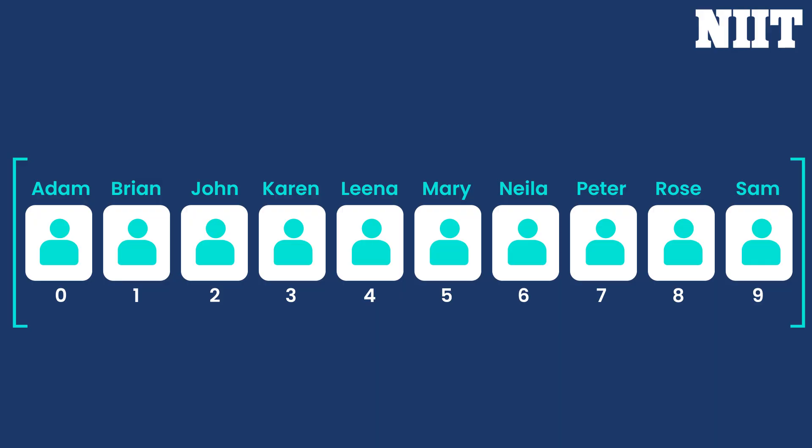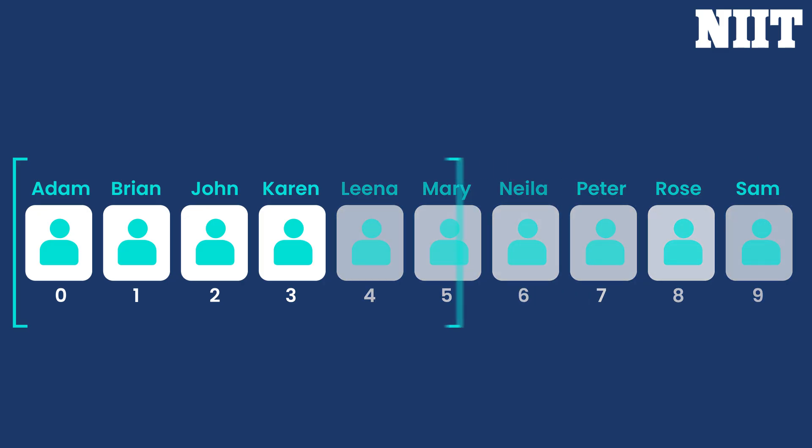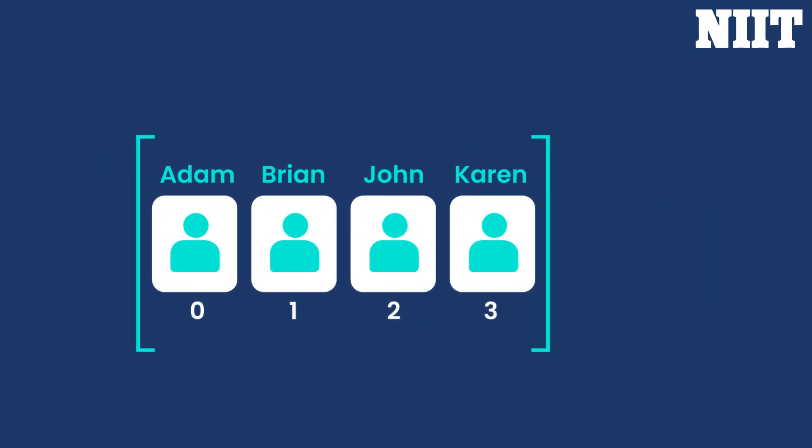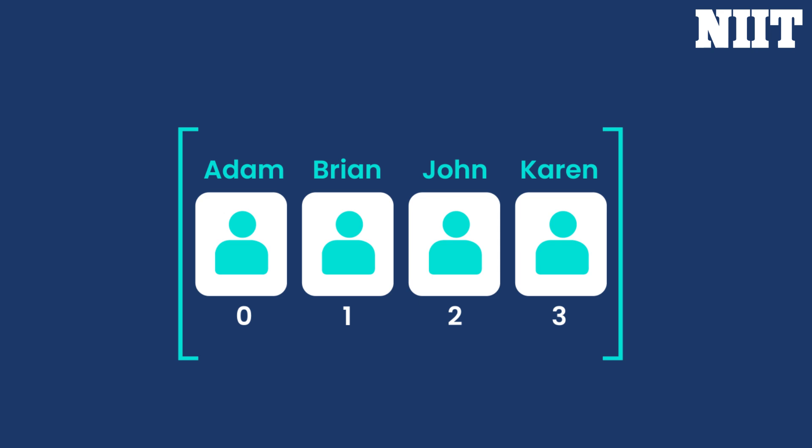Since the element at index 4 is LENA and J comes before L, we will search the record of John in the upper left part of the list.